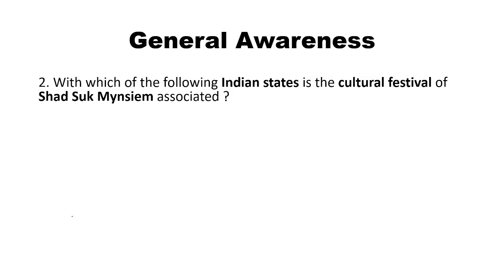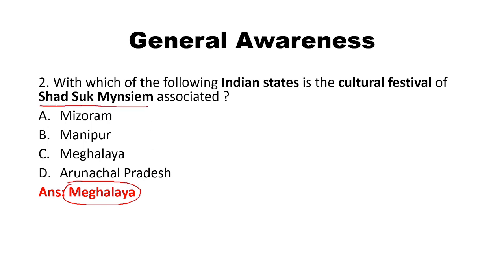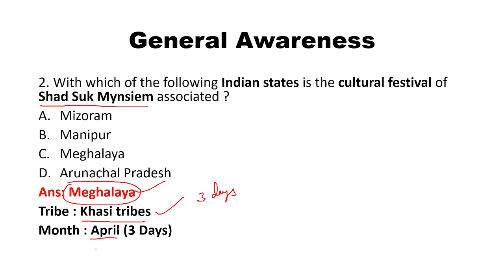With which of the following Indian states is the cultural festival of Shatsukh Maynesium associated? Options: Mizoram, Manipur, Meghalaya, Arunachal Pradesh. The answer is Meghalaya. Shatsukh Maynesium is associated with Meghalaya. The Kasi tribe participates in this cultural festival, and it is celebrated in the month of April for three days. The state, tribe, and month are very important from the exam point of view.